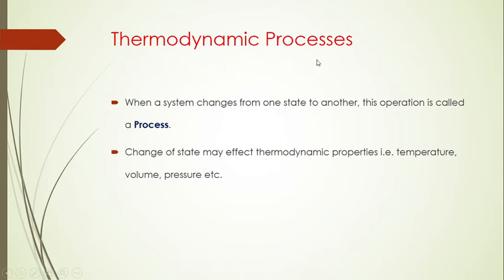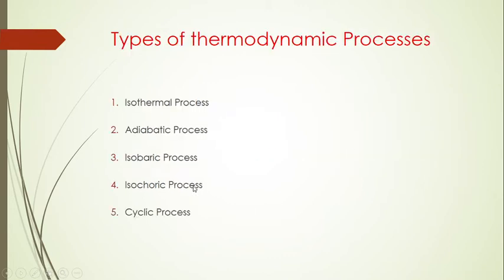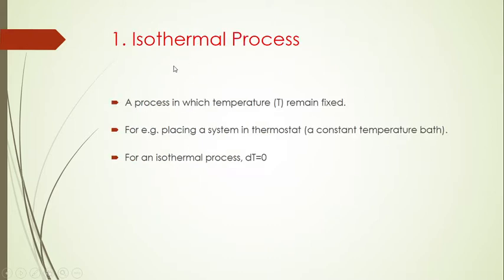First, we need to know what a process is. A process occurs when a system changes from one state to another — from an initial state to a final state — and thermodynamic properties such as temperature, volume, and pressure may change. We have five types of thermodynamic processes: isothermal, adiabatic, isobaric, isochoric, and cyclic.